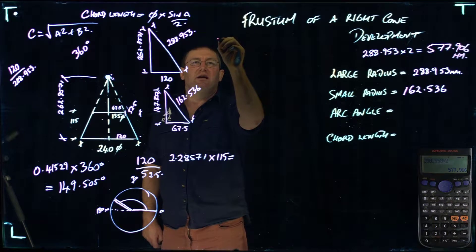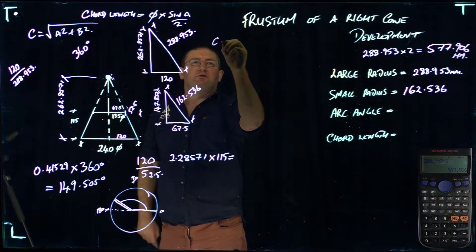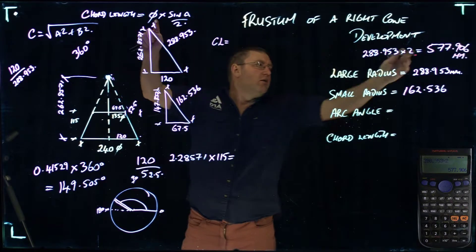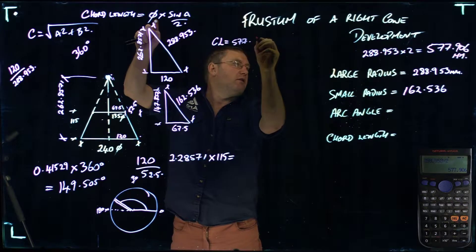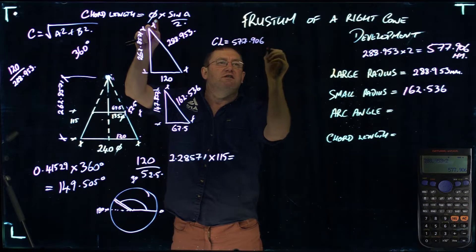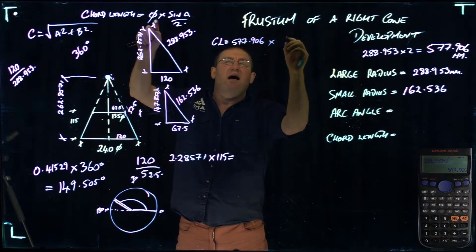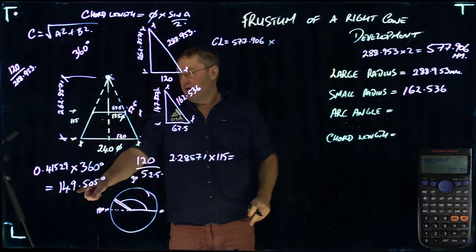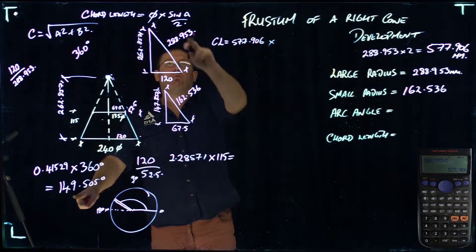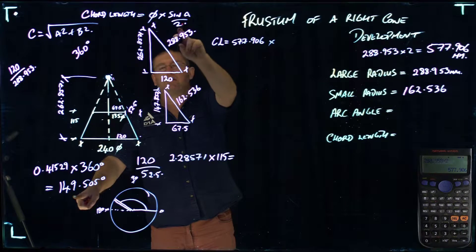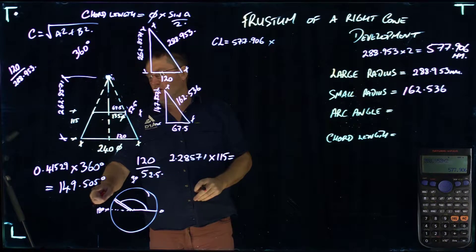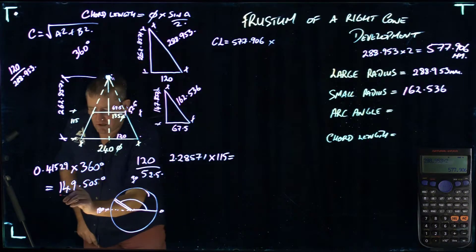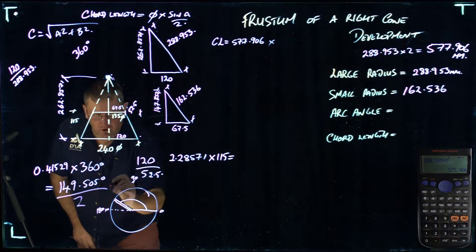Into that equation, I'm going to bring it down. Chord length equals diameter 577.906 times sine A over 2. Now the sine A is actually, what we have to do to get the sine figure is we take our angle of 149.505 and divide it by 2 before we push the sine button.